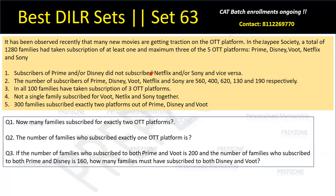Clearly we have five dimensions here and this is a classic case of a five-dimension Venn diagram. But the problem is we don't know how to plot a five-dimension Venn diagram. None of the coaching institutes apparently teach students how to interpret Venn diagrams by themselves, and hence I wanted to bring this up. You have to identify how many families subscribe for exactly two OTT platforms, exactly one, etc. — which means we have to solve this Venn diagram clearly.